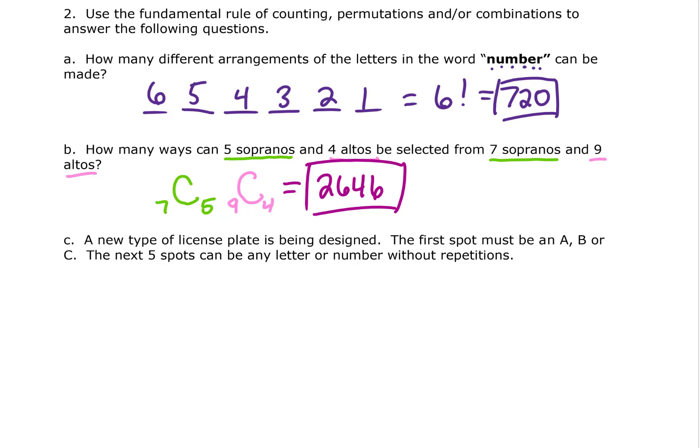We have a new type of license plate. The first spot must be an A, a B, or a C and the remaining five spots can be any letter or number without any repetition. How many choices do we have for our first spot? It looks like three: A, B, or C. For the next spot we can choose any letter or any number. We have 26 letters and 10 numbers to choose from, so that is 36 total options.